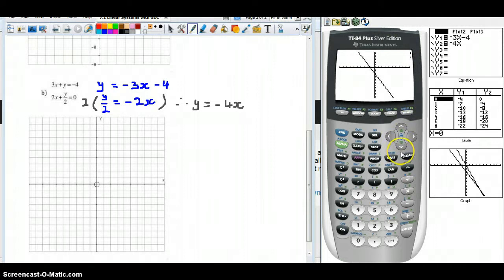This will allow us to see, not very clearly, but to see our point of intersection. I'll redo the calculation, calculate the intersection, first curve, second curve, guess. Here we have our intersection at X equals 4, Y equals minus 16. We'll come back across to make a note of that. Our intersection, X equals 4, Y equals minus 16, or we can write that as a coordinate point.